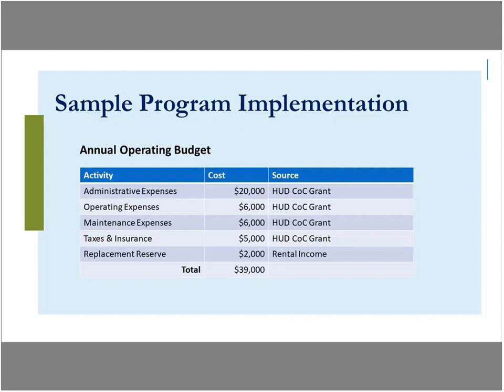The annual operating budget: this subrecipient serves people experiencing homelessness with substance use disorder and has access to sufficient Continuum of Care funds to cover most operating expenses — likely needed given the low anticipated income of residents, especially when they first move in. You'll likely need another source to make sure the property can cash flow. Covered expenses include admin expenses, general operating expenses such as utilities, maintenance costs for repairs and landscaping, taxes and insurance, and a replacement reserve to set aside money for upgrades or repairs beyond regular maintenance.